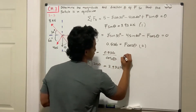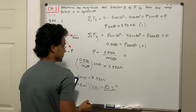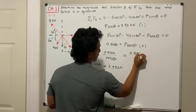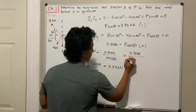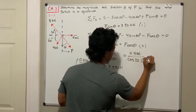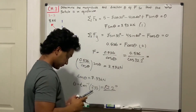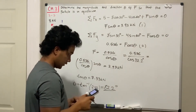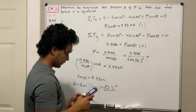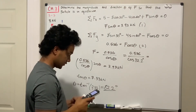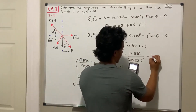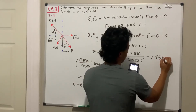Now we can solve for F. It's equal to 0.536 divided by the cosine of 82.2 degrees. Computing that: 0.536 divided by cosine of 82.2 equals 3.95 kilonewtons.